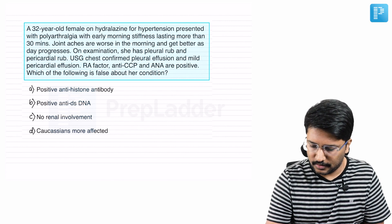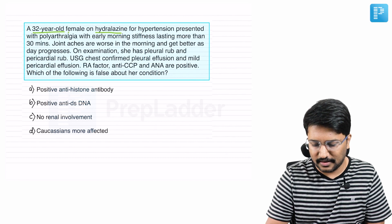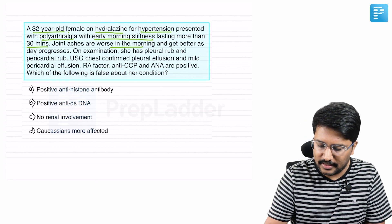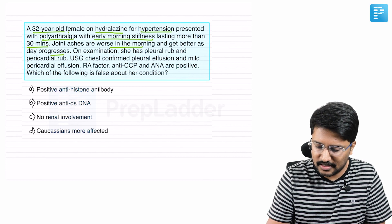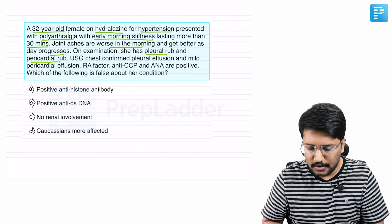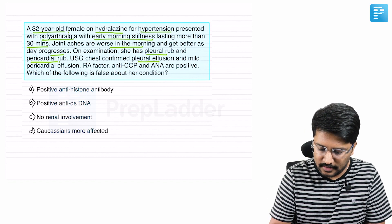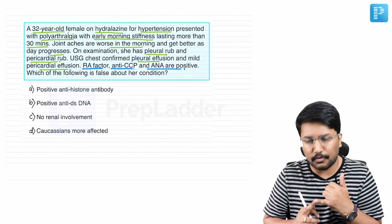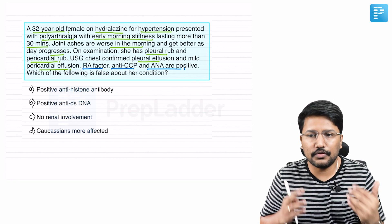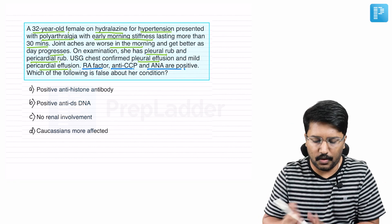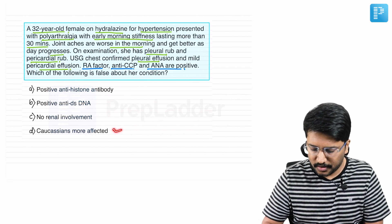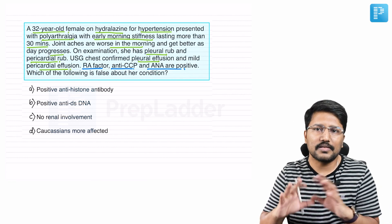Here is the question from the QBank: A 32-year-old female is on hydralazine for hypertension and presented with polyarthralgia with early morning stiffness lasting more than 30 minutes. Joint aches are worse in the morning and get better as the day progresses. On physical examination she has pleural rub and pericardial rub; ultrasound chest confirmed pleural effusion and mild pericardial effusion. She is positive for RA factor, anti-CCP, and ANA. Which of the following is false about her condition? Options: (A) positive anti-histone antibodies, (B) positive anti-dsDNA, (C) no renal involvement, (D) Caucasians more affected.